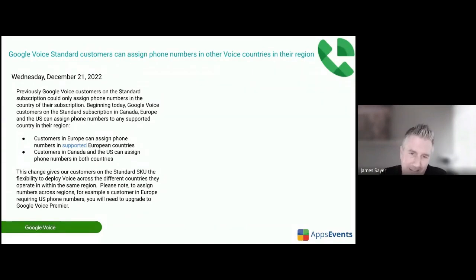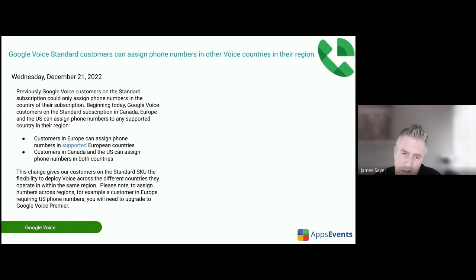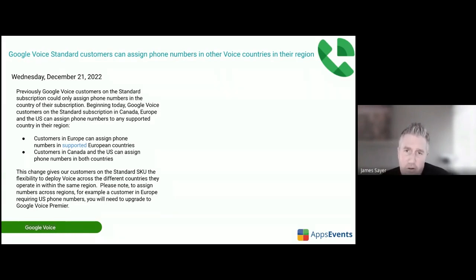For Google Voice standard customers — this is specific to schools using Google Voice — there are different packages within Google Voice. The standard is the most basic. What this update means is that you can now assign numbers from other countries in your region. For example, if you have a multi-campus domain with schools in France, Italy, and the UK, you could assign UK numbers to all of your campuses or users.